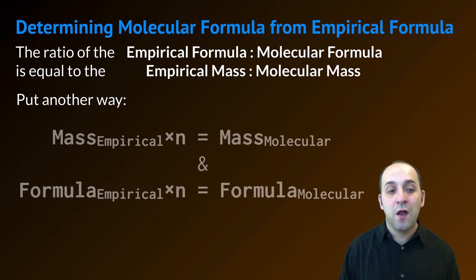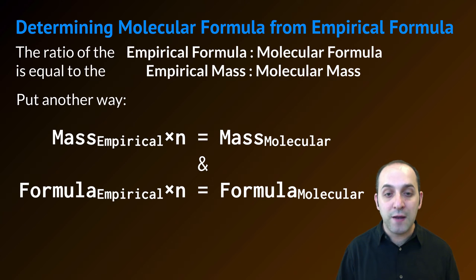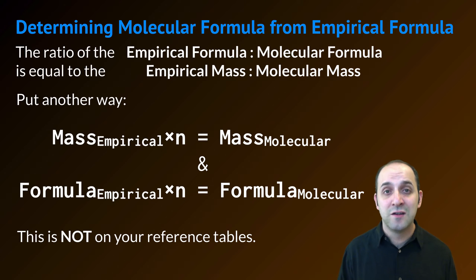Put it another way, the mass of the empirical formula unit times some number is going to be equal to the molecular formula. Similarly, the empirical formula times that same number is going to be equal to the molecular formula. Does this make sense? If it doesn't, write down any questions that you have, particularly since this is not on your reference tables, and then let's go through a problem.